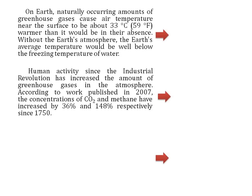The second subsection states: human activity since the industrial revolution has increased the amount of greenhouse gases in the atmosphere. According to work published in 2007, the concentration of CO2 and methane have increased by 36% and 148% respectively since 1750. So in the second paragraph, the author is talking about human activity and how it increased the concentration of carbon dioxide and methane.